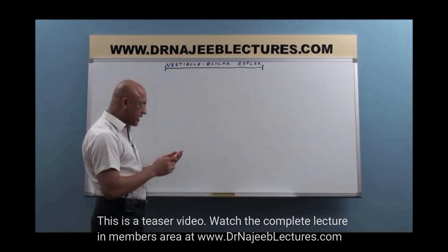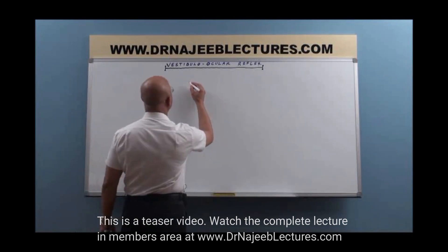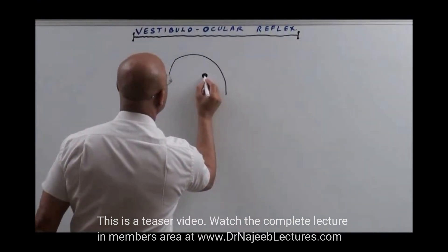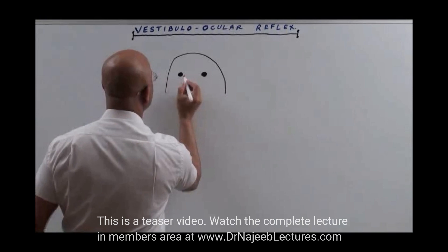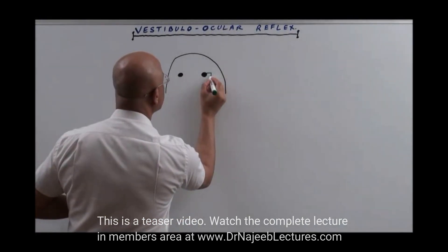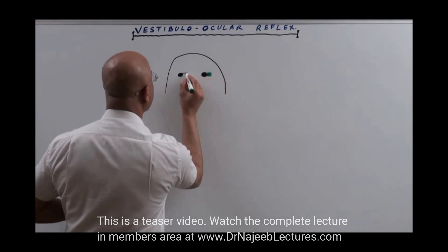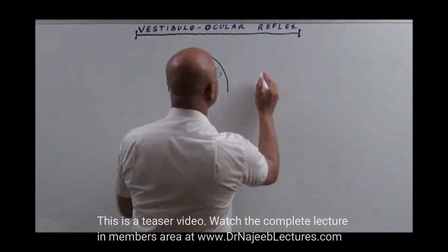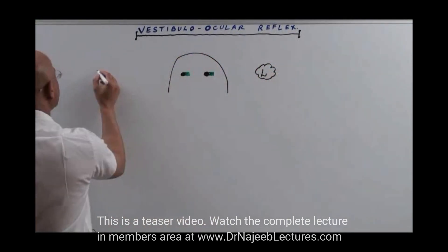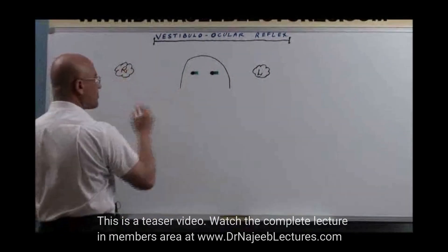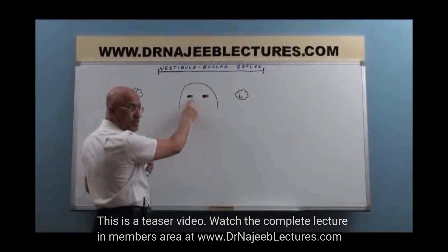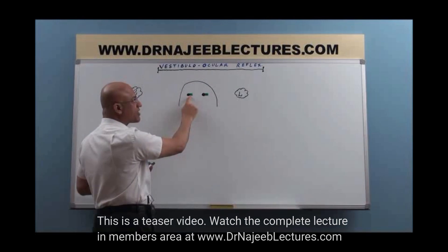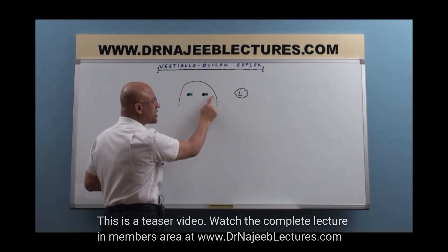Let's take the example: if I rotate my head rightward, how does this system operate? Here are my eyes and the muscles — the lateral rectus of the left eye and the medial rectus of the right eye. If both contract, both eyes move conjugately to the left side. If the medial rectus of the left eye and lateral rectus of the right eye contract simultaneously, eyes deviate to the right.